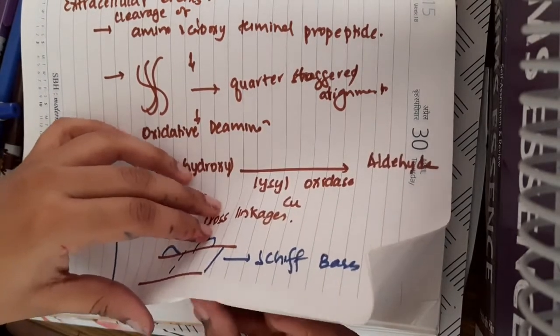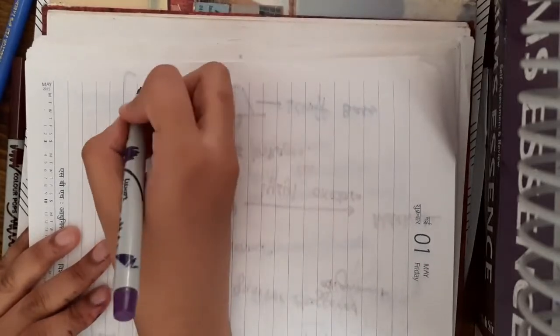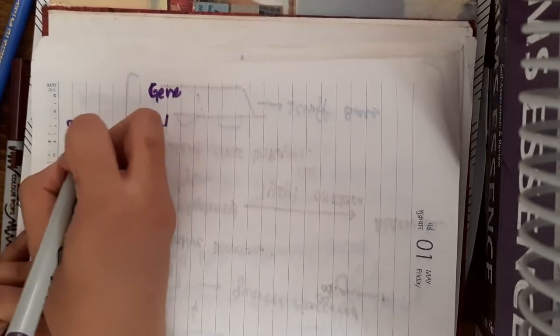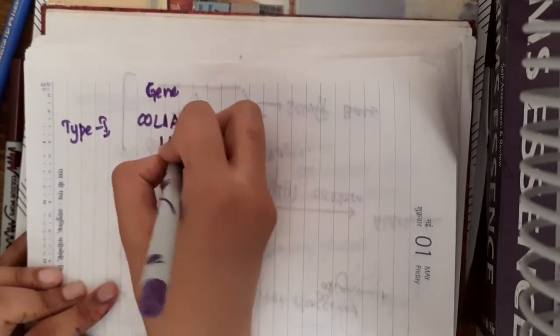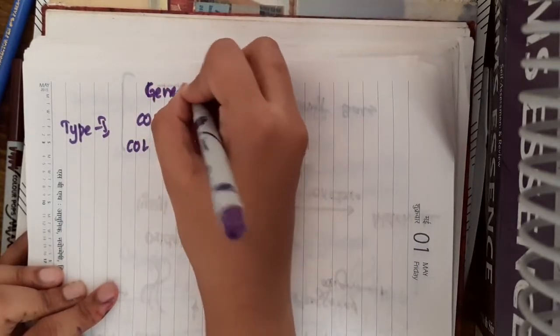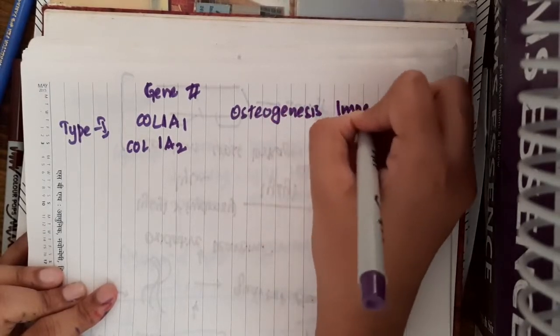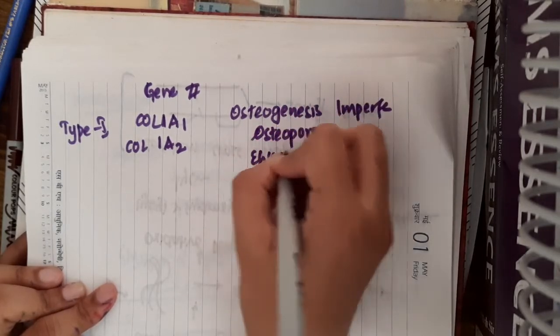What is important next is the clinical problems due to collagen issues. This is asked many times in AIIMS examinations. If you see, in the diseases, the gene COL1A1 and COL1A2 code for type 1 collagen. So, this results in diseases. Whenever there is defect in these genes, it results in osteogenesis imperfecta and osteoporosis, and it also results in Ehler-Danlos syndrome.